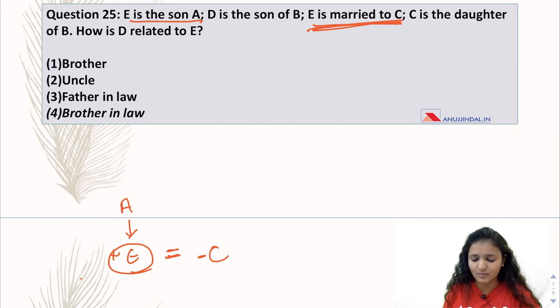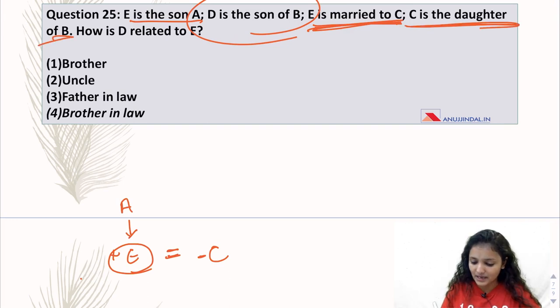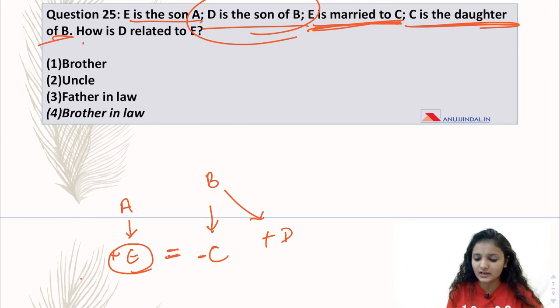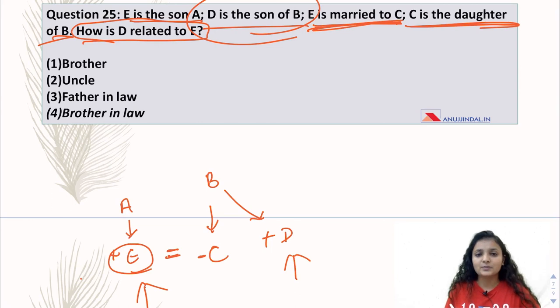Now for this question: E is the son of A, so A plus E. The tip is to find the common alphabet and start your flow chart from there. D is the son of B, E is married to C. E is common, so E equals C with minus C because C is female. D is son of B, C is daughter of B. They asked how is D related to E? E is the husband of D's sister, so E is the brother-in-law of D. The answer is option number 4.